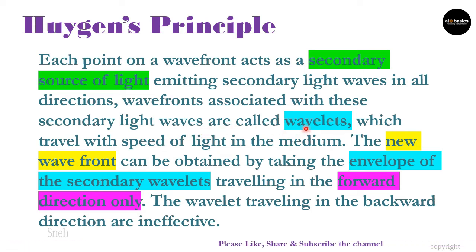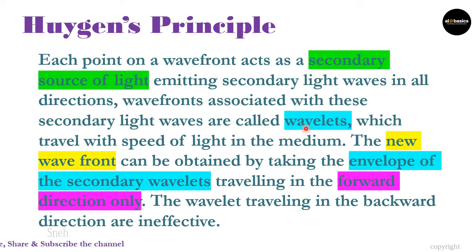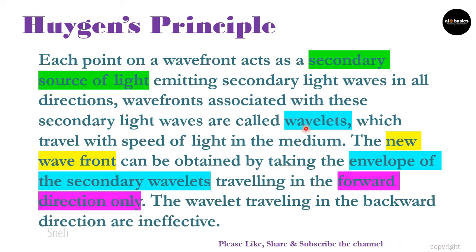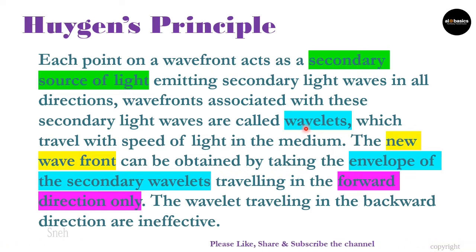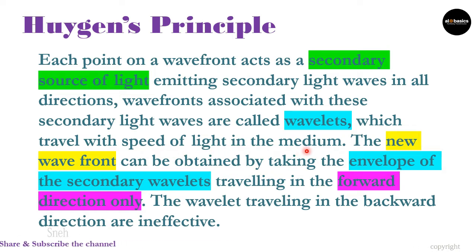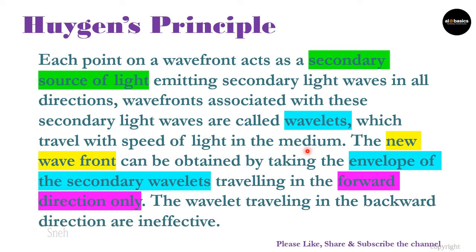So what are wavelets? Wavelets are nothing but the wavefronts associated with secondary light waves. Primary light waves give us wavefronts, whereas secondary light waves give us wavelets. These wavelets travel with the speed of light in the medium, so the speed of the wavefront and wavelets is the same.